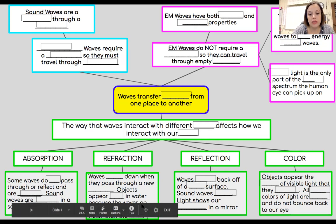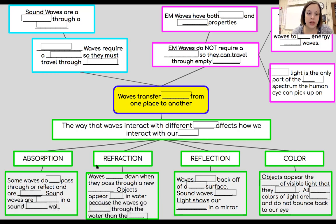I'm going to go down to the bottom half of our chart now where they have a lime green border, and we're going to look at this together. So we said that waves transfer energy from one place to another, right under that is a big box with a green border and it says a long box. The way that waves interact with different medium affects how we interact with our world.